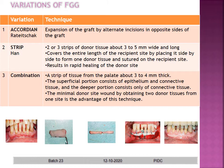The combination technique takes a strip of tissue from the palate about 3 to 4 mm thick. The superficial portion consists of epithelium and connective tissue, while the deeper portion consists of connective tissue alone, giving two graft materials that can be placed side by side. The advantage is that minimal donor site morbidity is achieved by obtaining two graft materials from one site.